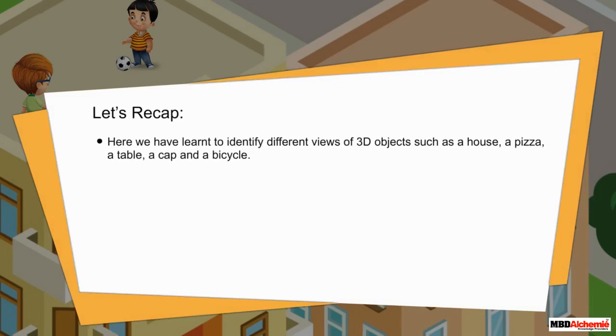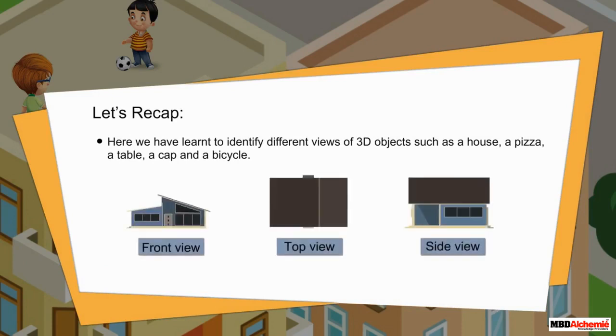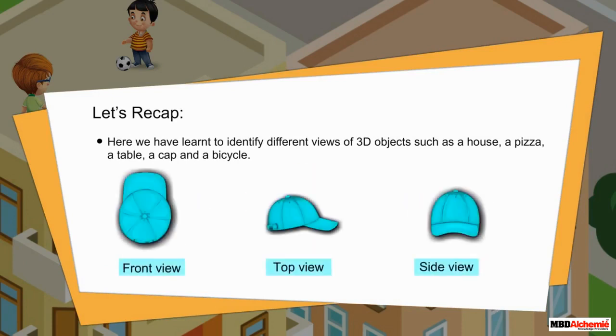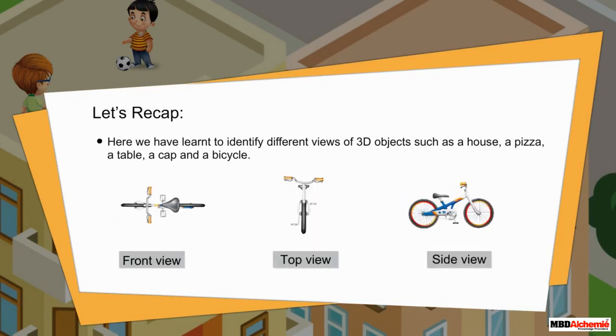Let's recap. Here we have learned to identify different views of 3D objects such as a house, a table, a cap, and a bicycle.